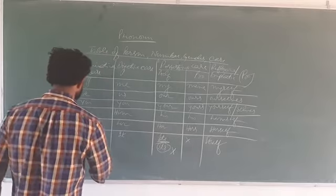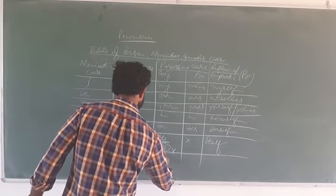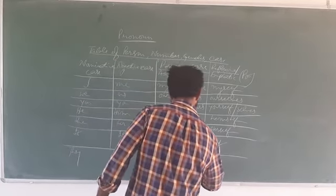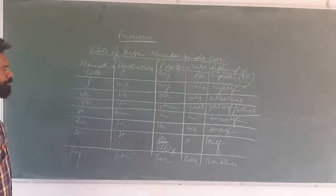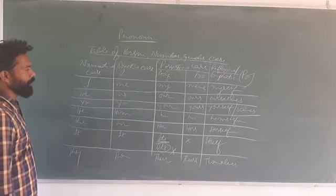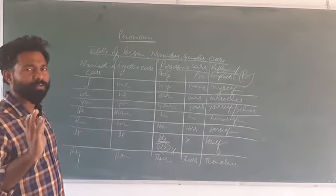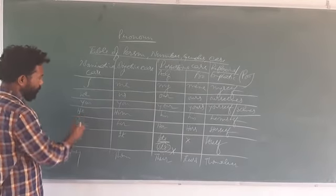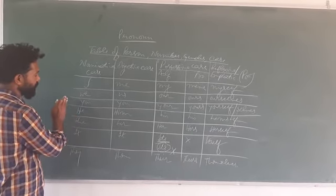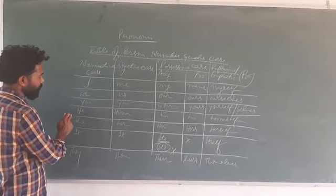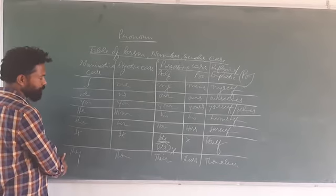Third person plural: they, them, their, theirs, and themselves. These are all the nominative cases: I, we, you, he, she, it, they — covering first person singular, first person plural, second person, and third person singular masculine, feminine, and neuter, as well as third person plural.